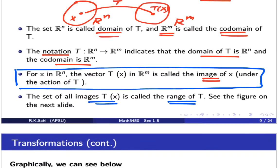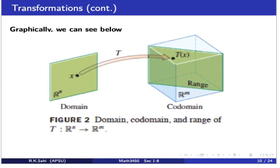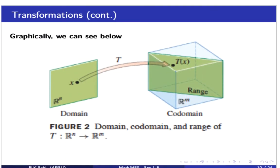We can look at this graphically. A transformation is a function — it is a mapping. According to the definition of a function, every element in the domain has to be used. When T acts on R^n via matrix multiplication, it takes us to a new element in R^m. The range is a subset of R^m, while the codomain is all of R^m.